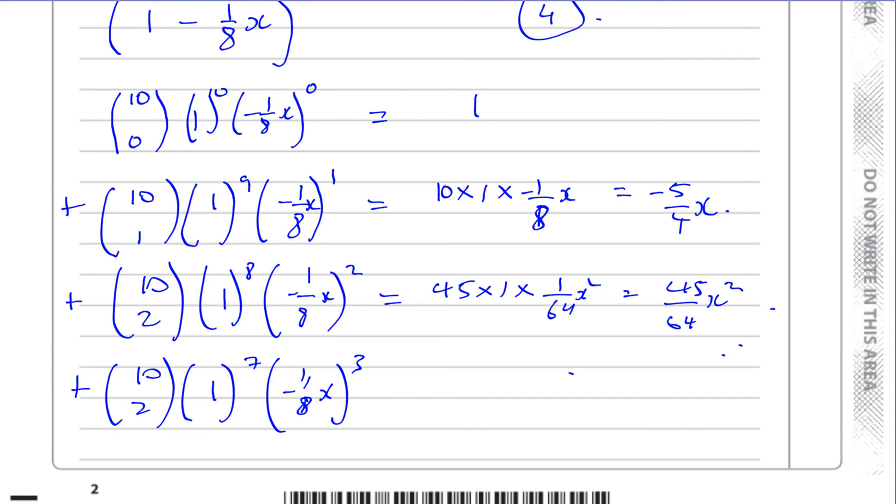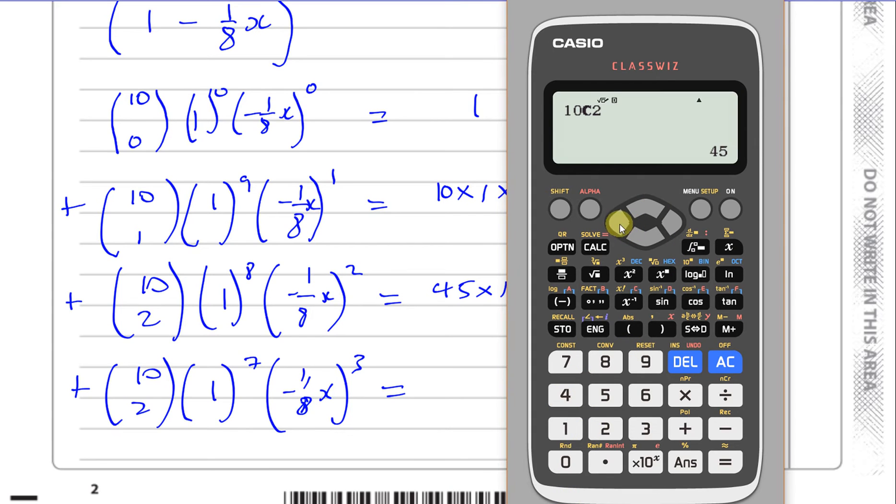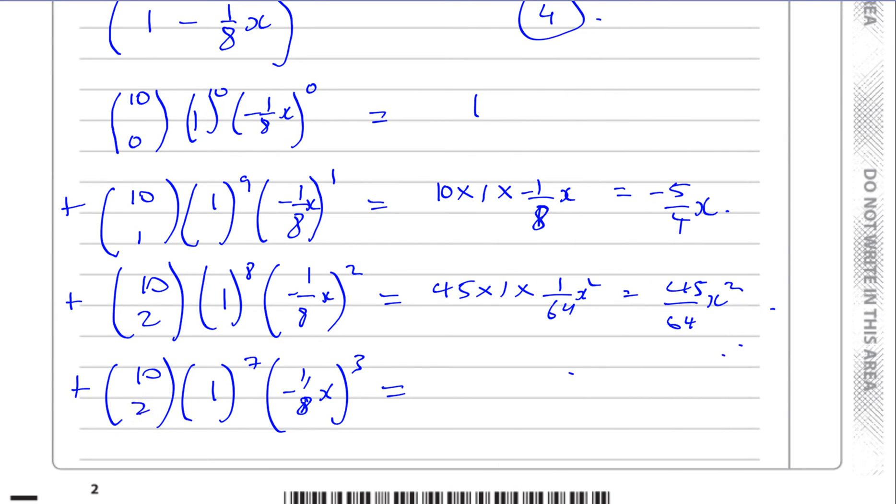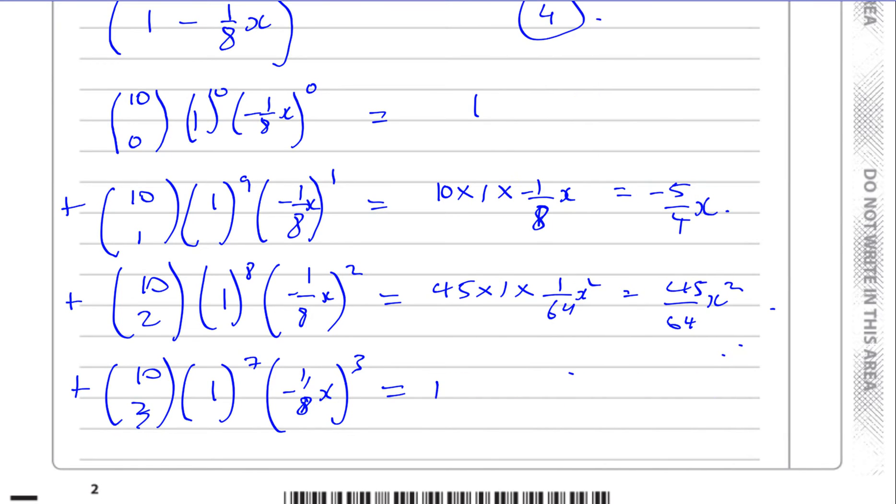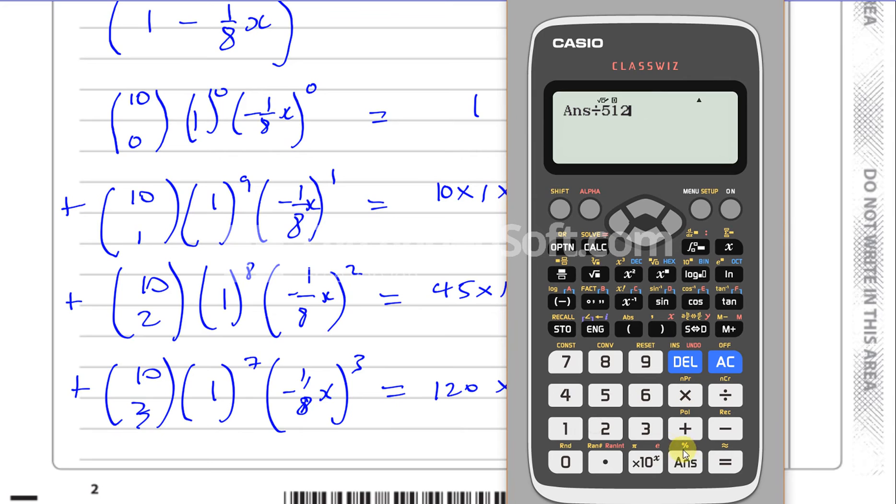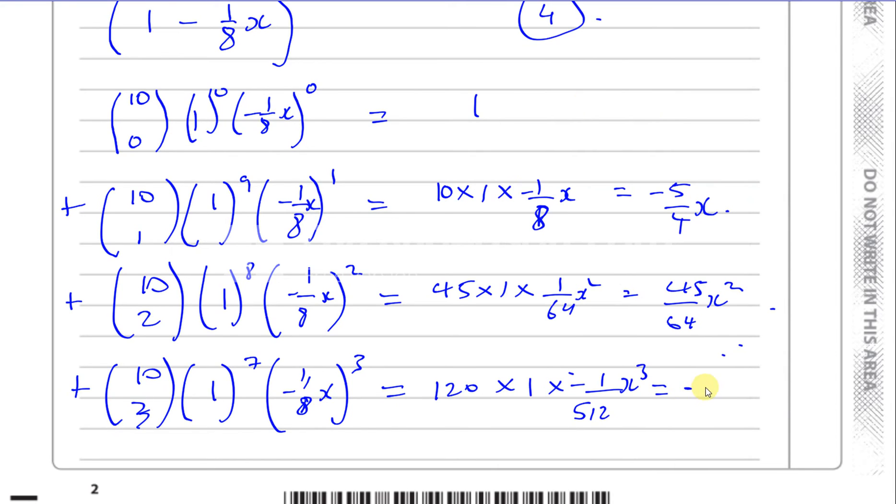Now, the next part, you have 10c3. So you could do the same thing again, just go 10c3. Sorry about that, it's 10c3, be careful. So you're going to do 10c3, which gives you 120, so you have 120. Again, 1 to the power of anything is going to be 1 times, this is going to be negative still, 1 over 512, this is x cubed. So you end up with a negative, and you have, as we found before, 120 divided by 512 gives us 15 over 64. So you end up with minus 15 over 64x cubed.